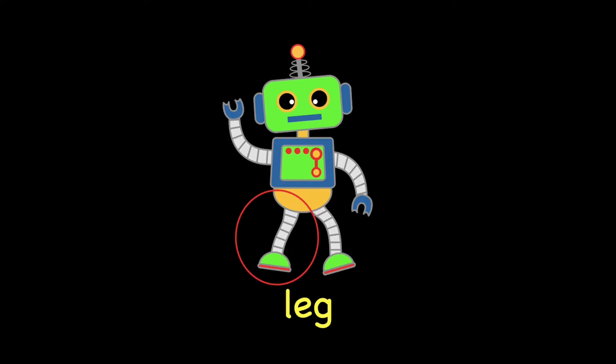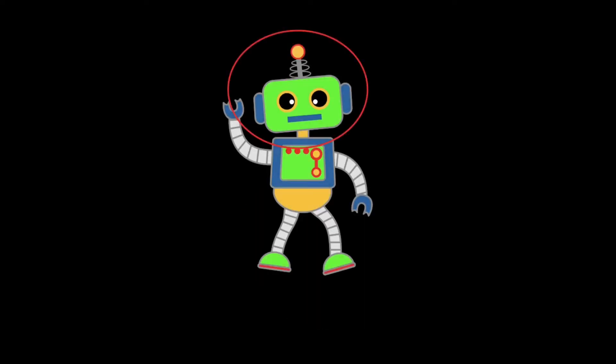The next word we have is head. Repeat after me: head. This robot has got a head.